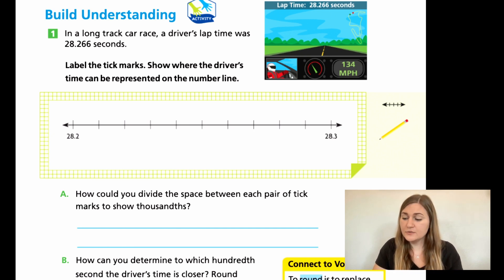For A, it says, how could you divide the space between each pair of tick marks to show thousandths? So right now we're spreading it up into hundredths. How would we show thousandths if we needed to? For B, how can you determine to which hundredth second the driver's time is closer? Round 28.266 or 28 and 266 thousandths seconds to the nearest hundredth. And then for C, how can you determine to which tenth second the driver's time is closer? So round 28 and 266 thousandths to the nearest tenth. So in B, you're rounding to the hundredths place, but in C, you're rounding to the tenths place. So that'll be the last digit in your number. Go ahead and try these few problems and then come back and we'll solve them together.